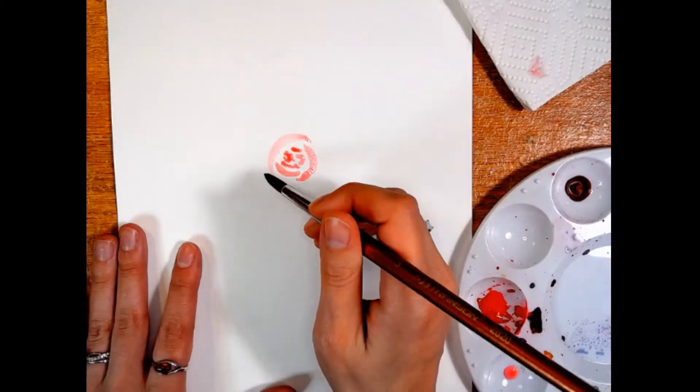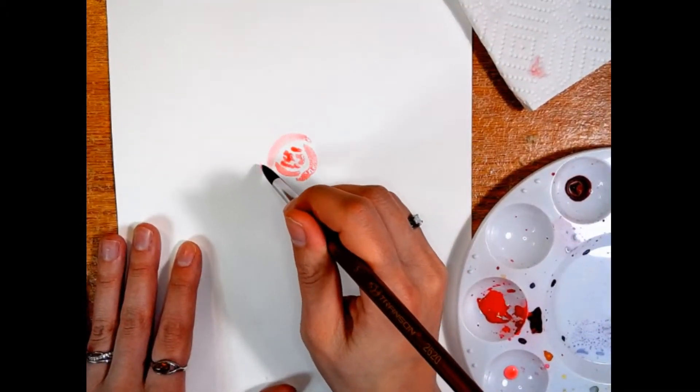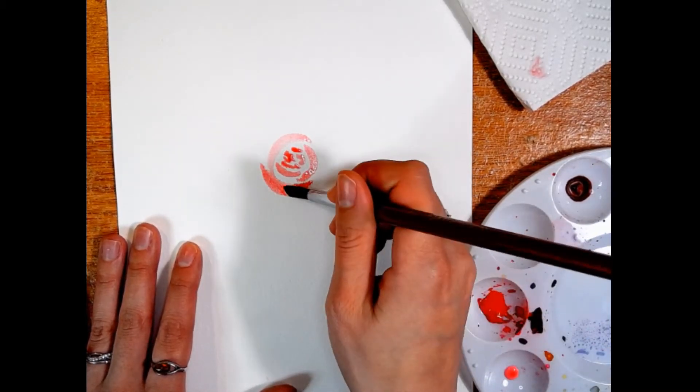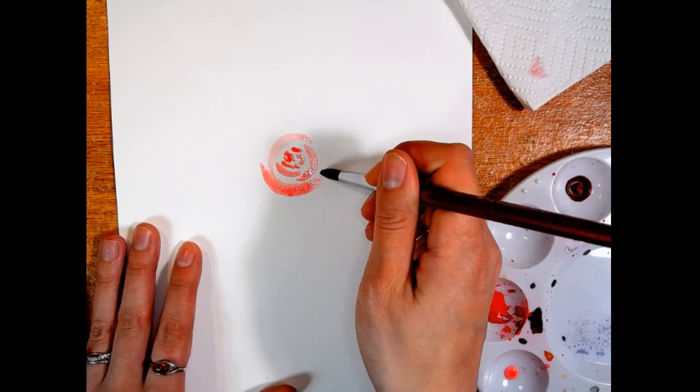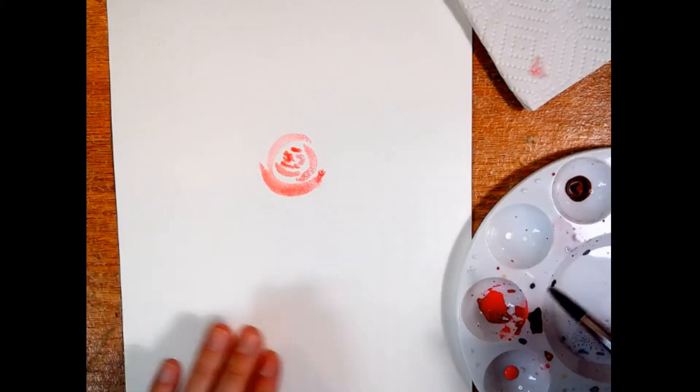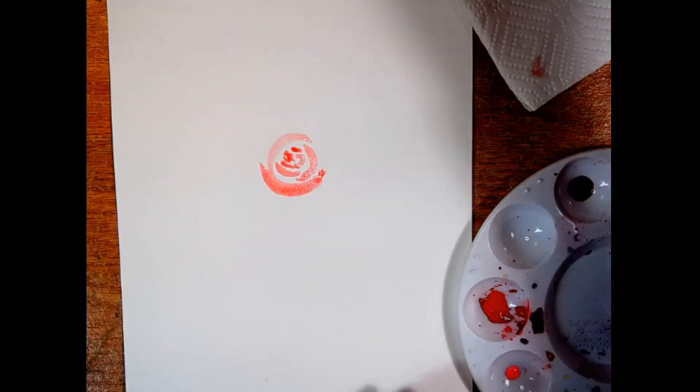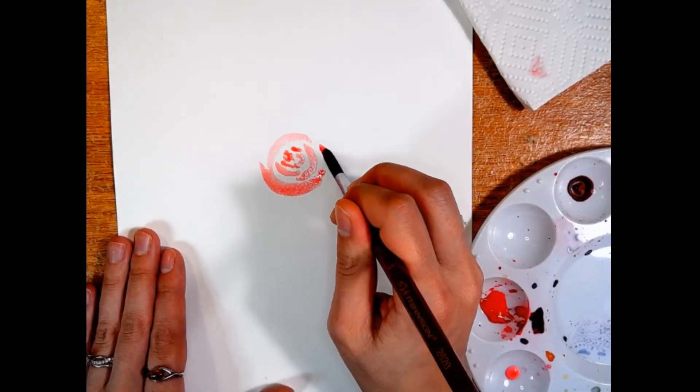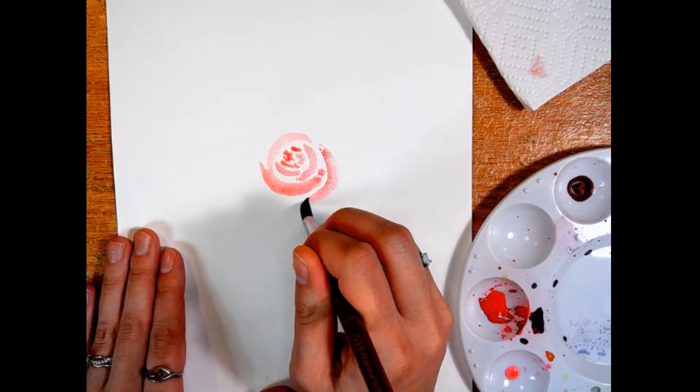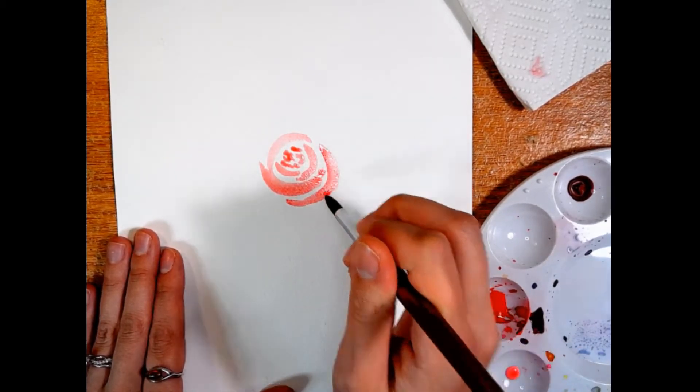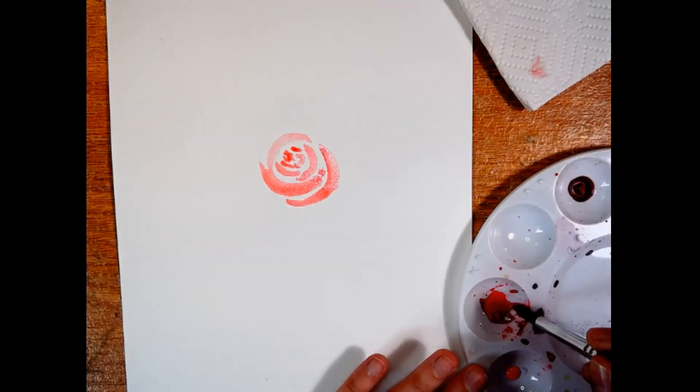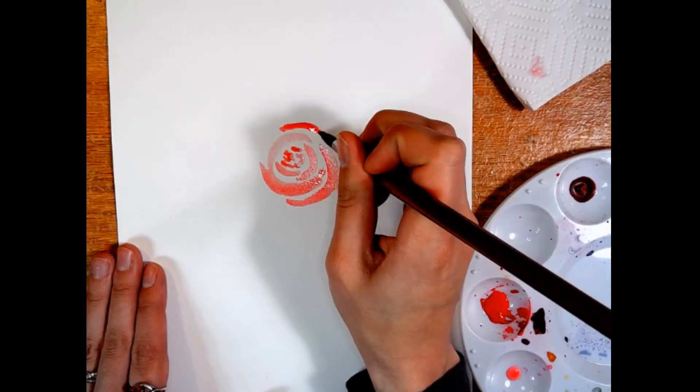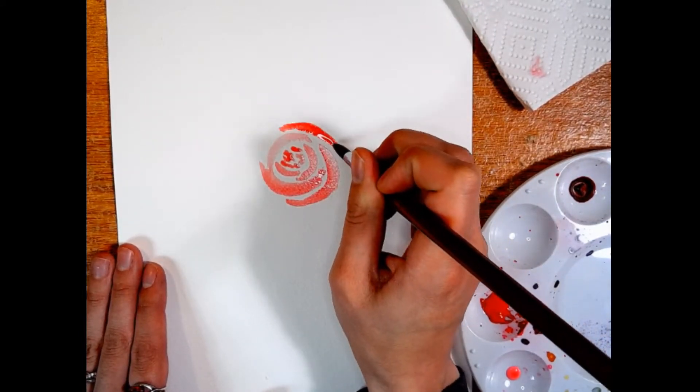And I'll just keep building them outwards and upwards. I would like this rose to be pointing upwards slightly, so I am going to focus most of my larger petals on the bottom edge here, and that will give the impression that our flower is pointed upwards. So I do thinner petals at the top and I do less of them.